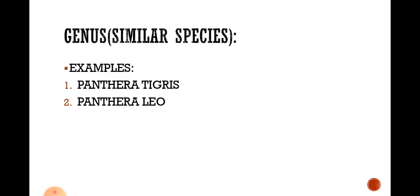The next category is Genus. Similar species come under a genus. For example, Panthera tigris and Panthera leo: Panthera tigris is the scientific name of tiger, and Panthera leo is the scientific name of lion. They both share similar properties, and hence they are placed under the same genus.